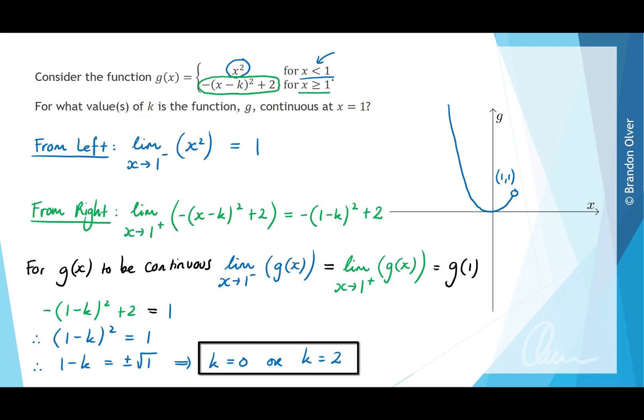These are the values that would make g of x continuous at x equals 1. In terms of what that means for the function, we could either have this happening if k equals 0, or if k equals 2 we could have this happening. In both cases we have a continuous function that we could draw without lifting our pen from the paper.